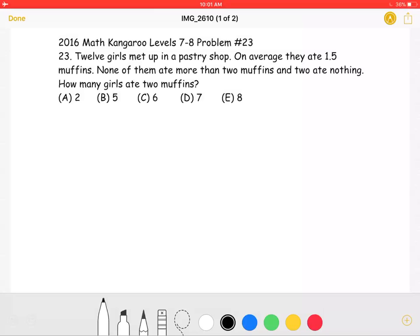This is the 2016 math kangaroo, level 7-8, problem number 23. Twelve girls met up in a pastry shop. On average, they ate 1.5 muffins. None of them ate more than two muffins and two ate nothing. How many girls ate two muffins?